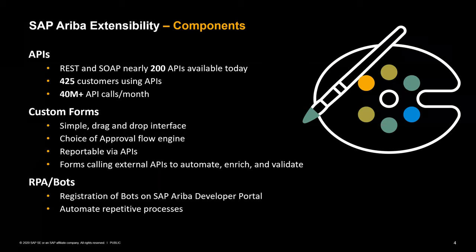Let's get started with the components of extensibility. Today we have around 200 APIs available. Some are RESTful APIs, others are SOAP or web service APIs. At the moment we have about 425 customers using these APIs, and we're seeing about 40 million API calls per month. Customers are using these in a lot of unique ways, which we'll get to in just a little bit.